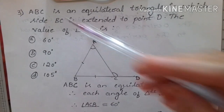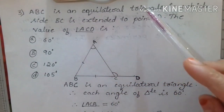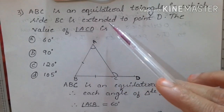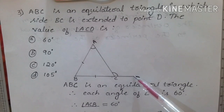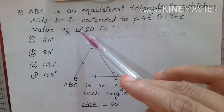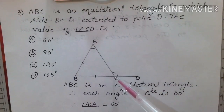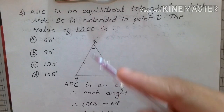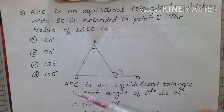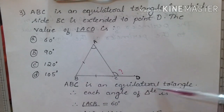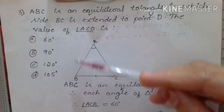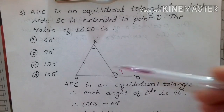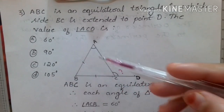Next question: ABC is an equilateral triangle in which side BC is extended to point D. We have to find the value of angle ACD. Since ABC is an equilateral triangle, each angle of the triangle is 60 degrees.